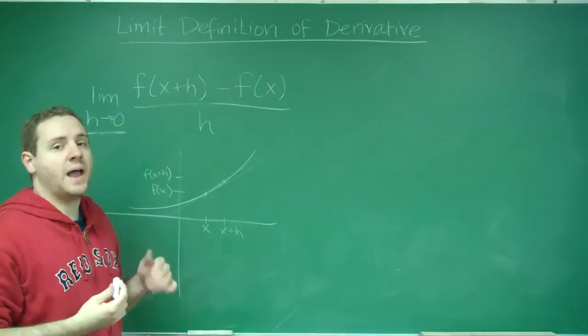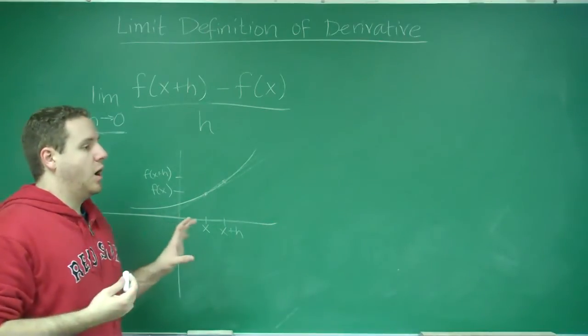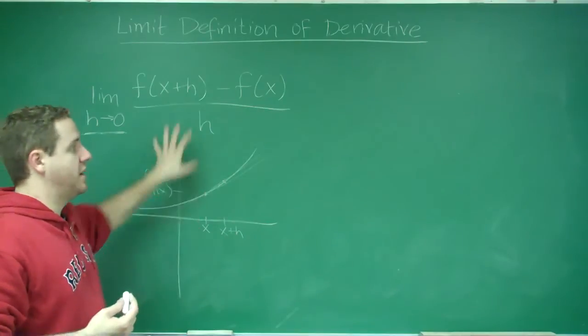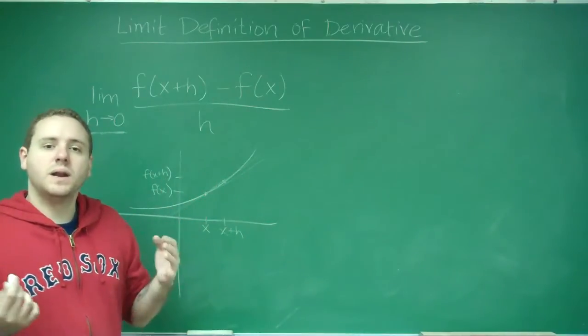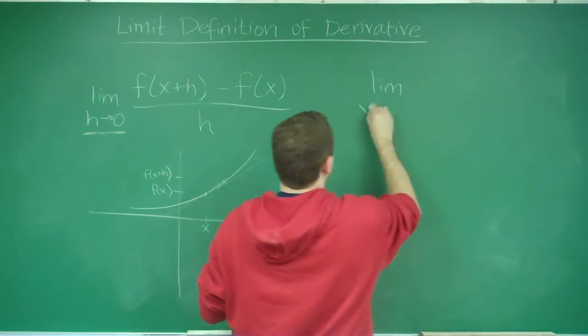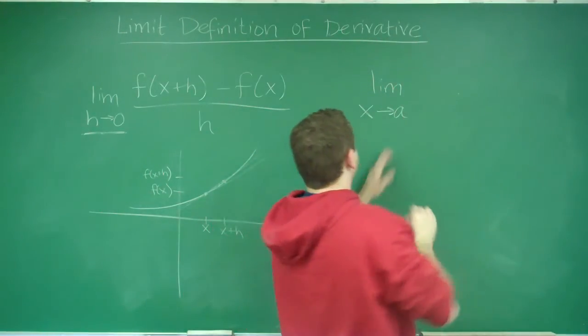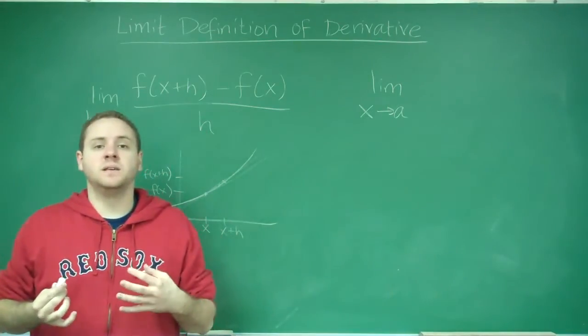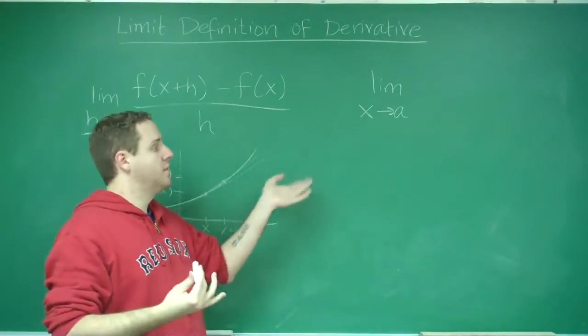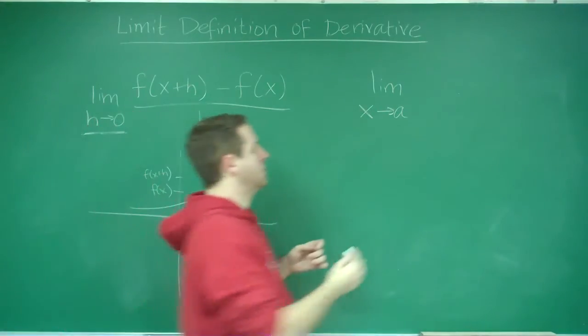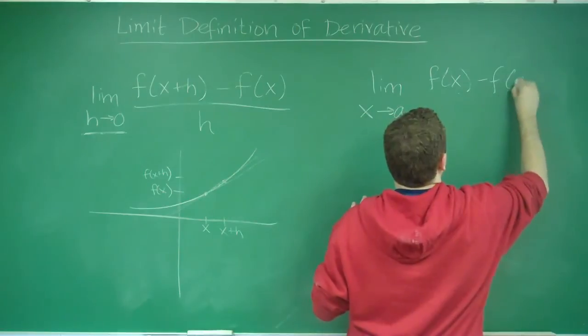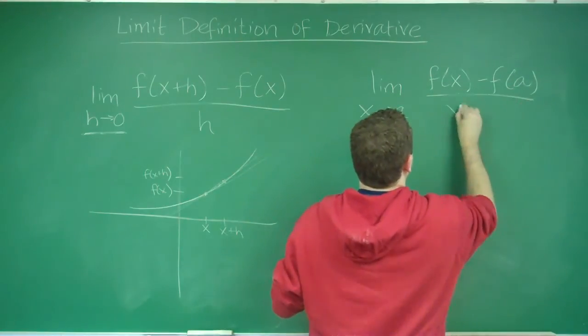The other way you could do that, if you want the derivative at a specific point - this is in general to find the derivative of a function - if you want it at a specific point though, you can use this formula: limit as x approaches a, where a is the point. So if you want to find the derivative when x equals 2, then you would use 2 for a. You just do f of x minus f of a over x minus a.